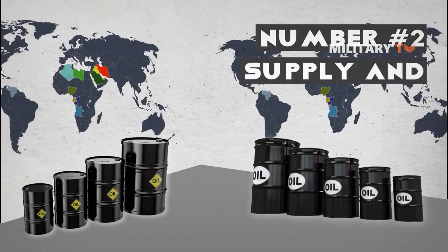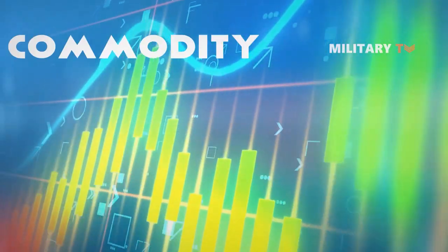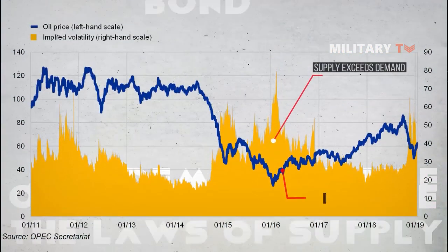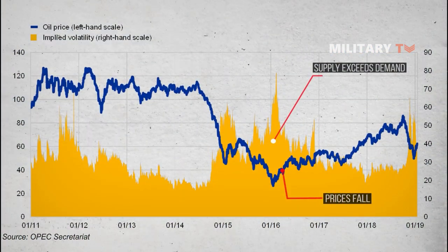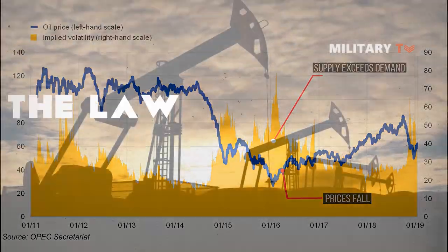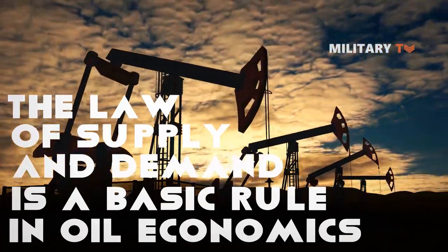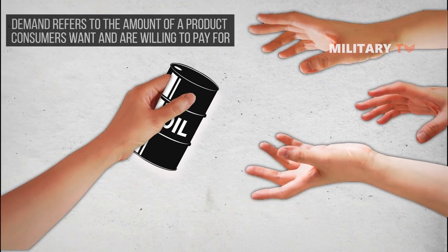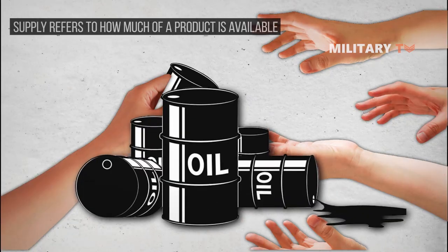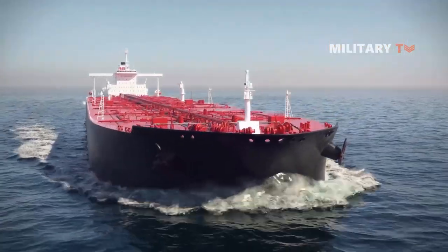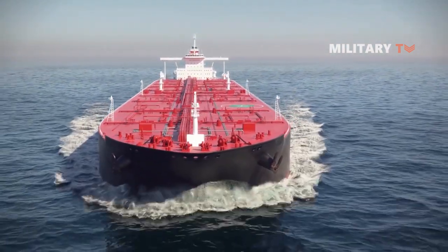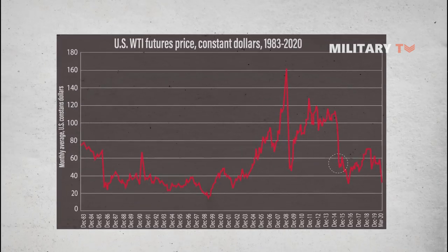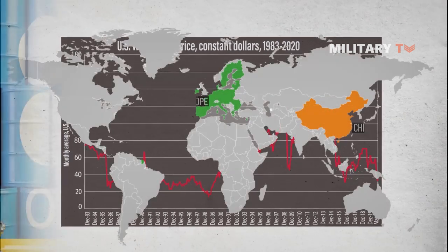Number 2: Supply and Demand Impact. As with any commodity, stock, or bond, the laws of supply and demand cause oil prices to change. When supply exceeds demand, prices fall. The inverse is also true when demand outpaces supply. Demand refers to the amount of a product consumers want and are willing to pay for. Supply refers to how much of a product is available. The dramatic drop in oil prices in 2014 has been attributed to lower demand for oil in Europe and China, coupled with a steady supply of oil from OPEC.